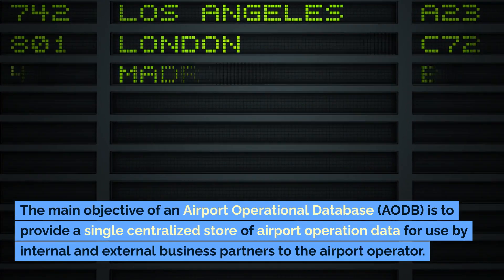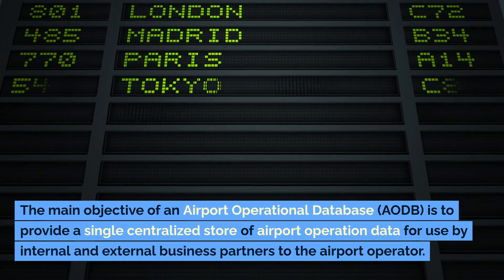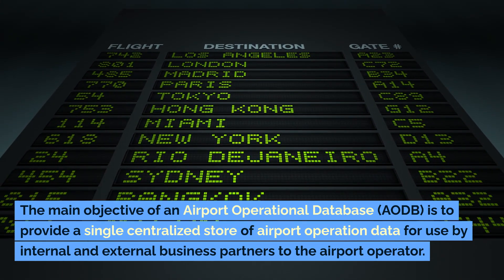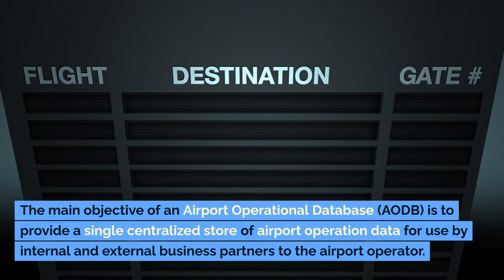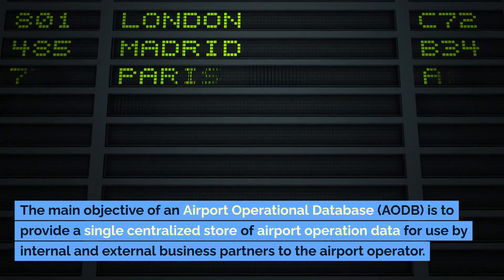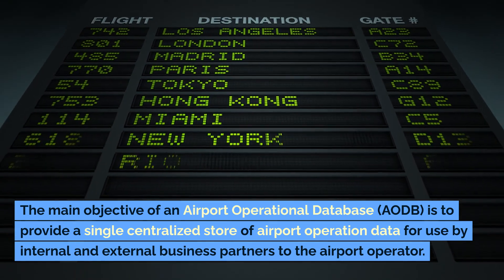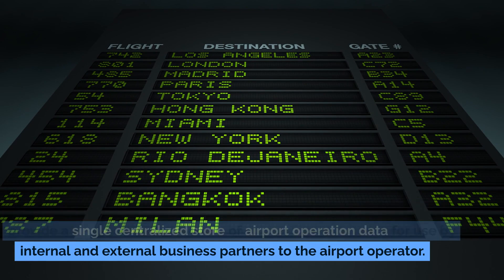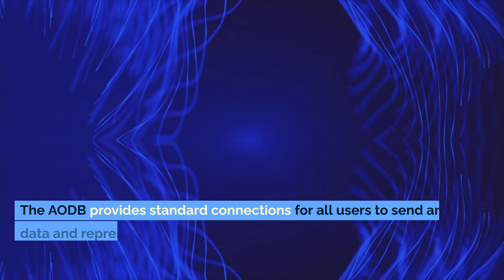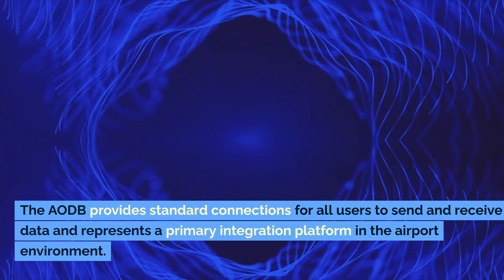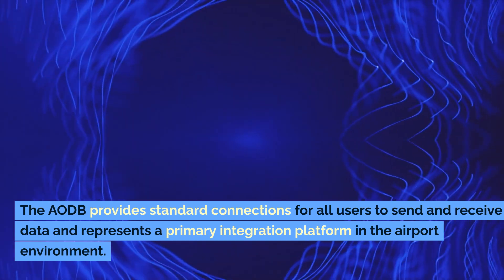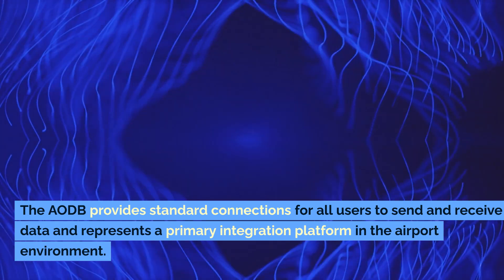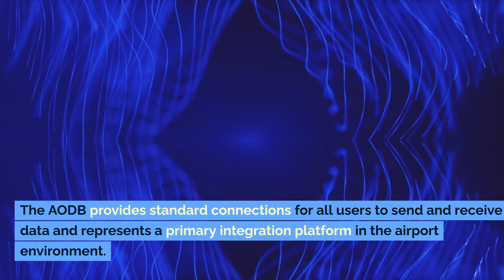The main objective of an airport operational database (AODB) is to provide a single centralized store of airport operation data for use by internal and external business partners to the airport operator. The AODB provides standard connections for all users to send and receive data, and represents a primary integration platform in the airport environment.